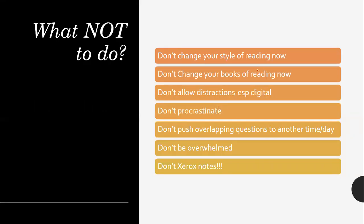What not to do: don't change your style of reading by looking at somebody else. What has worked for you will continue to work for you. Don't change your books — whatever you have been reading will help you throughout. Don't allow digital distractions; the moment you take your phone, that is 30 minutes lost — you open WhatsApp or Telegram and get sucked in. Don't procrastinate. If you are not able to do something, write it down on the side, but try not to push it to the next day. If you can finish it today, complete it today.